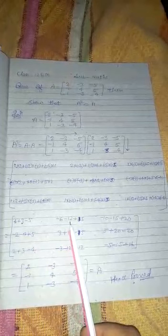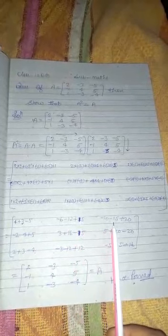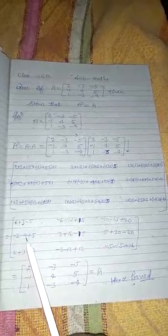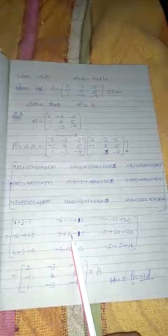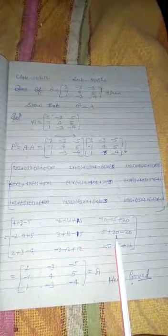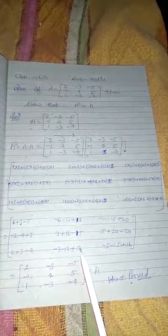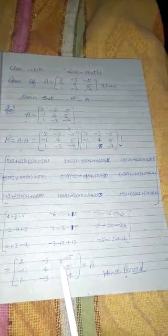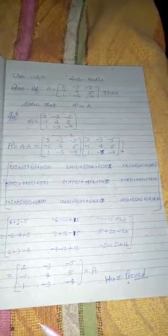Computing all entries: 4 + 3 - 5 = 2; -6 - 12 + 15 = -3; -10 - 15 + 20 = -5; -2 - 4 + 5 = -1; 3 + 16 - 15 = 4; 5 + 20 - 20 = 5; 2 + 3 - 4 = 1; -3 - 12 + 12 = -3; -5 - 15 + 16 = -4. This gives the matrix [2, -3, -5; -1, 4, 5; 1, -3, -4], which equals A. Hence proved.